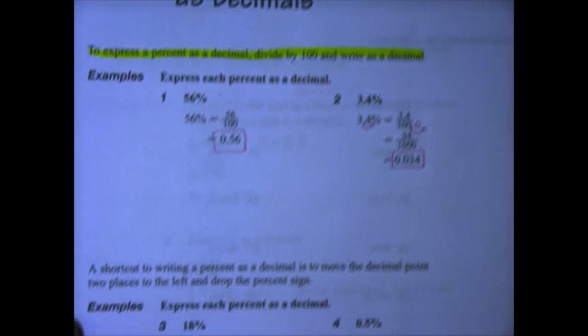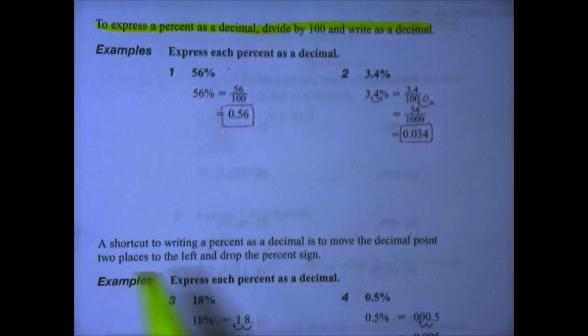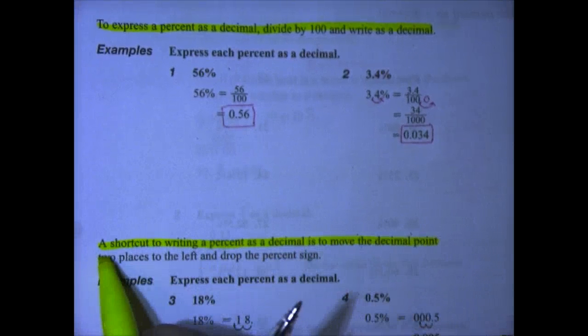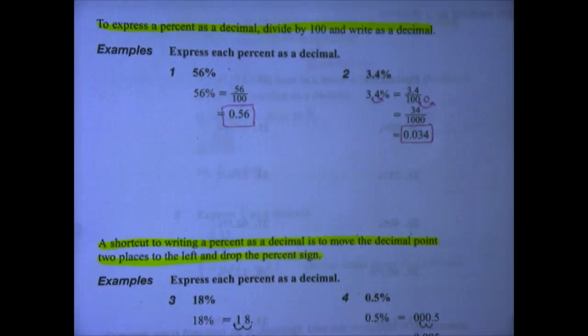Now let's look at the shortcut. The shortcut to writing a percent as a decimal is to move the decimal point two places to the left and drop the percent sign.